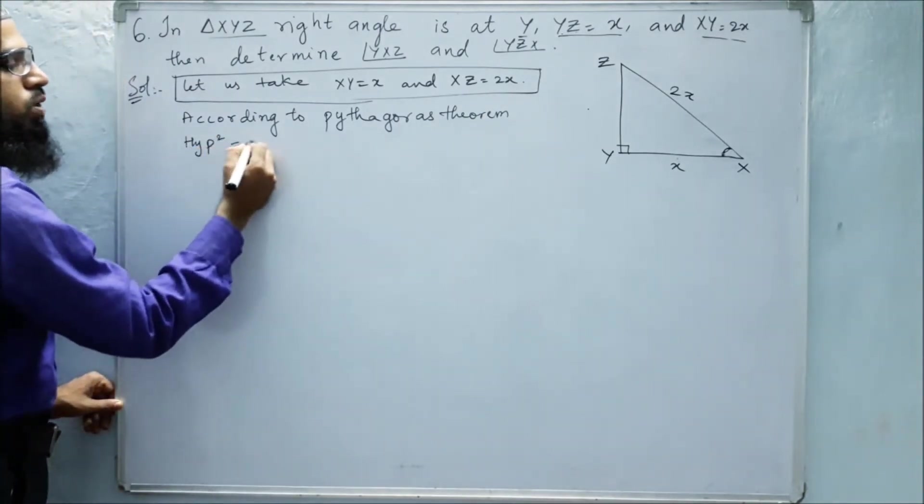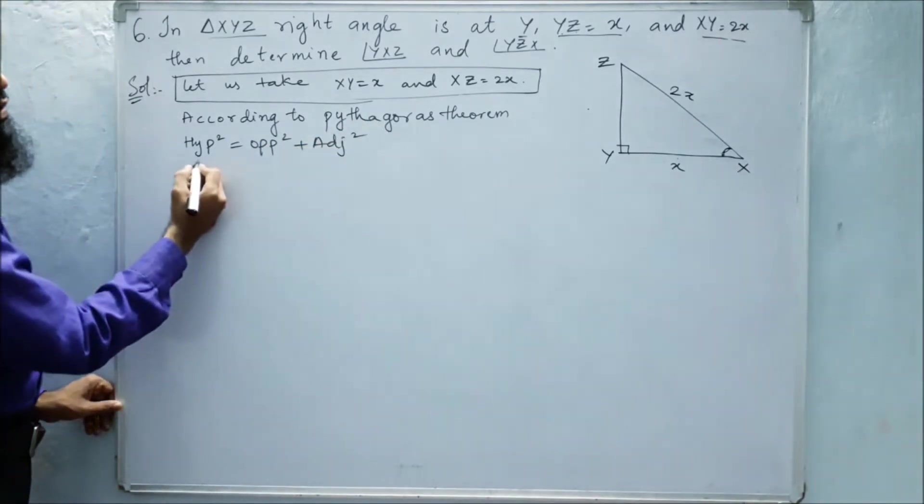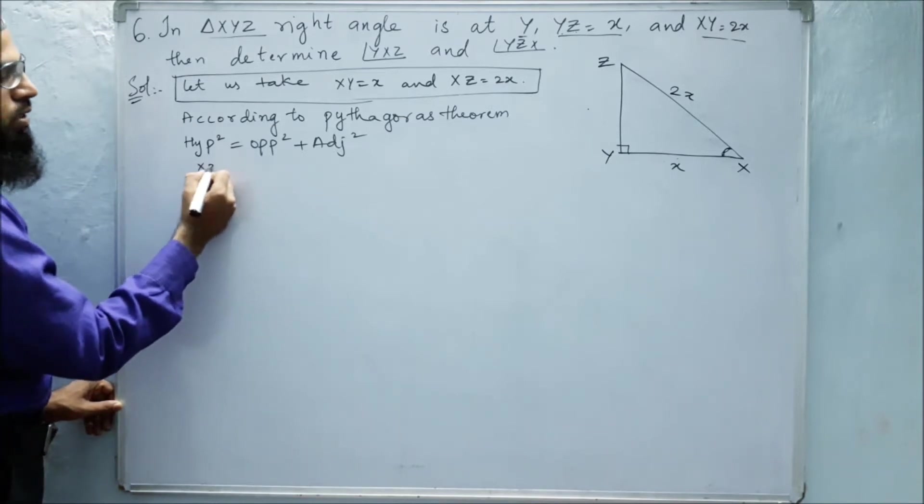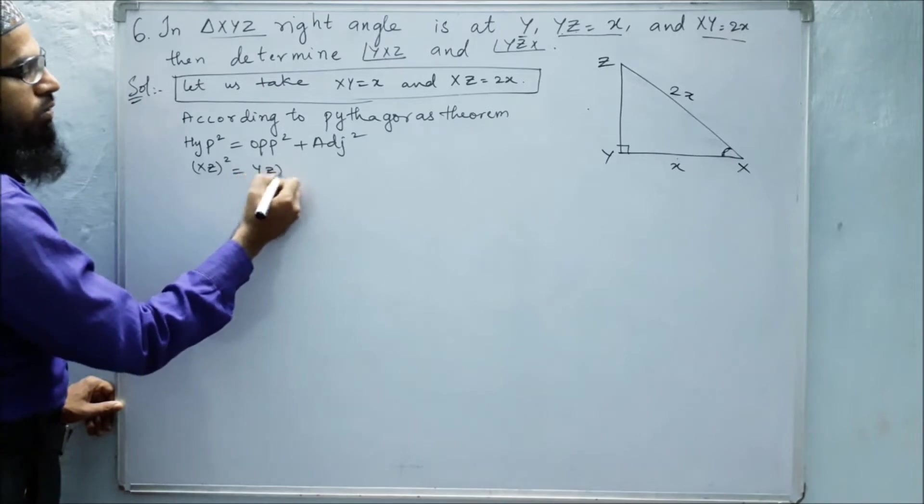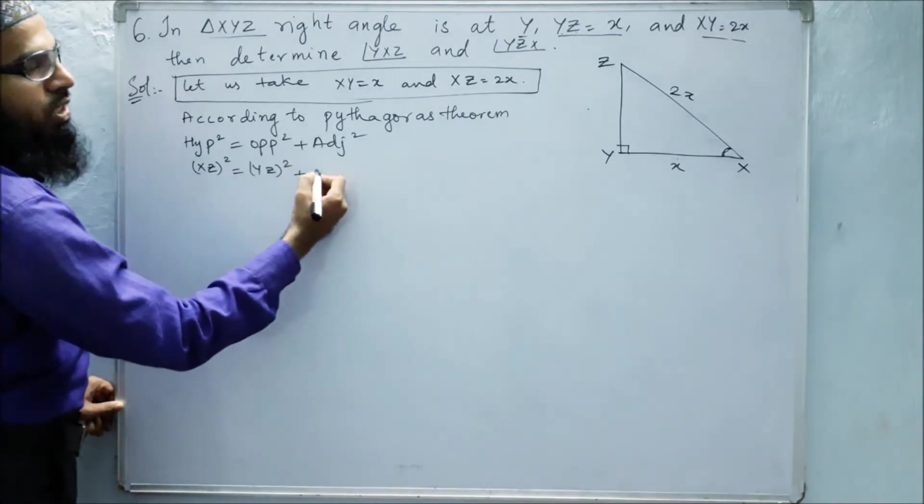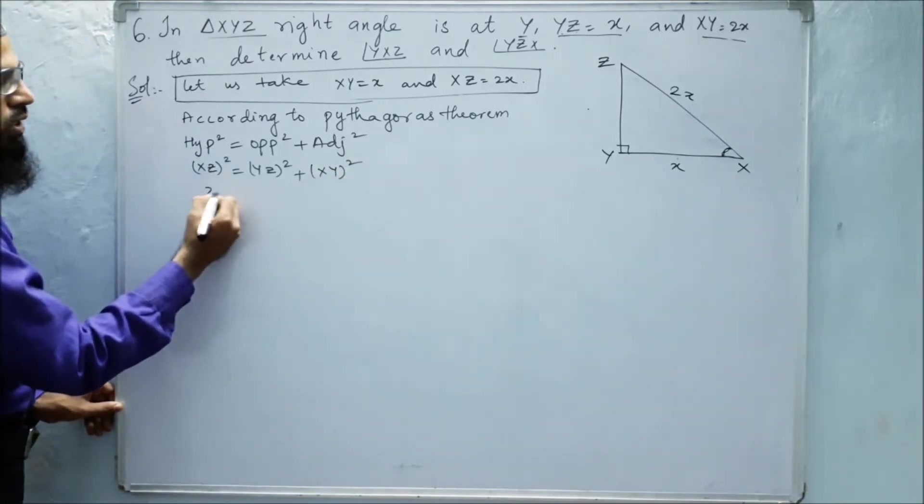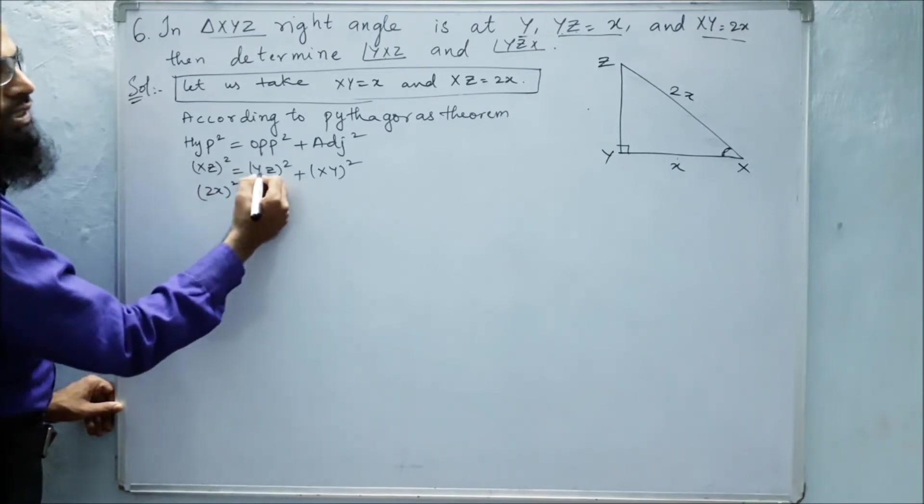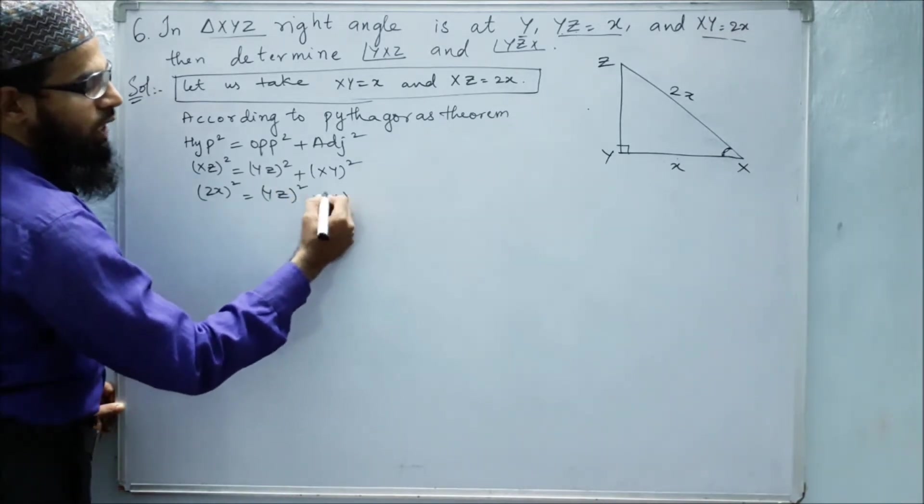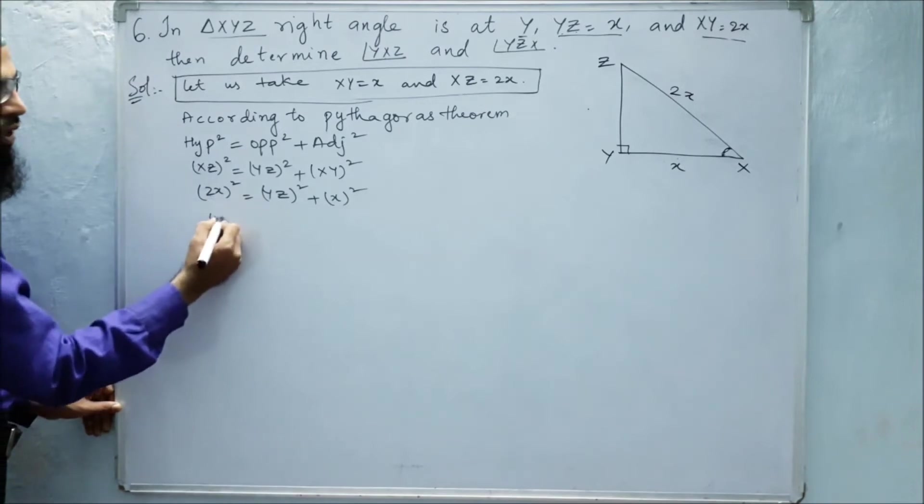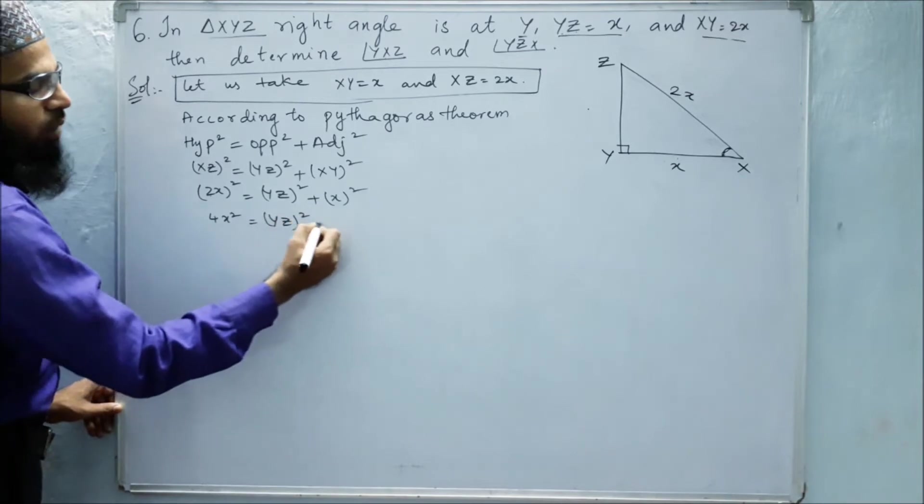For finding those values, we know that according to Pythagoras theorem, we get hypotenuse squared equals opposite squared plus adjacent squared. So what is hypotenuse? XZ whole squared. Opposite is YZ whole squared, plus adjacent is XY whole squared. XZ we know is 2x squared. YZ we don't know this value, YZ whole squared, plus XY is x whole squared. 2 squared is 4x squared equals YZ whole squared plus x squared.